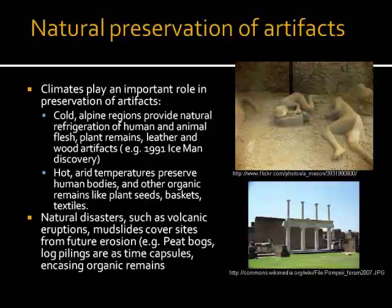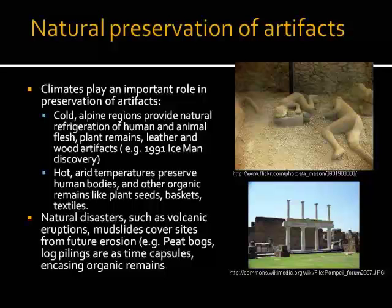When we look at natural preservation of artifacts, we think about the ways archaeologists come to have rich resources in some locations and more difficult access in others. Climate plays a real important role in the preservation of artifacts. Cold alpine regions provide natural refrigeration of human and animal flesh, plant remains, leather, and wood — for example, the 1991 Iceman discovery. On the other hand, hot, arid temperatures preserve human bodies and other organic materials such as plant seeds, baskets, and textiles.